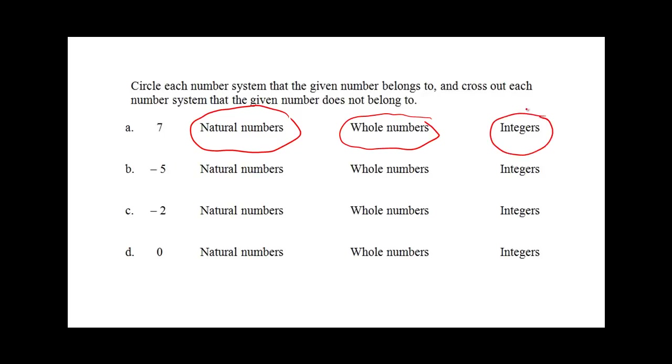Now let's look at the number negative 5. Negative 5 is not a natural number. It is not a whole number. But negative 5 is an integer.